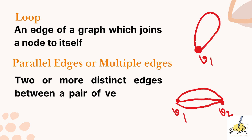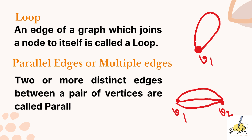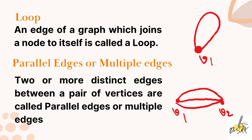What is a loop? An edge of a graph which joins a node to itself is called a loop. Here V1 is the element or point which joins itself. That is why this edge — which joins itself — is known as a loop, as shown in the first diagram.